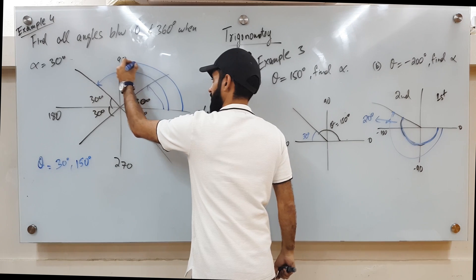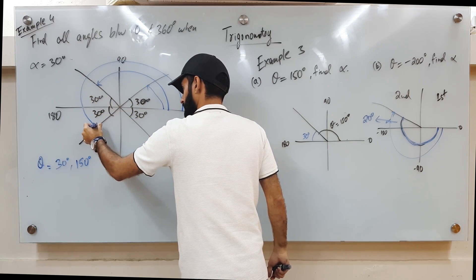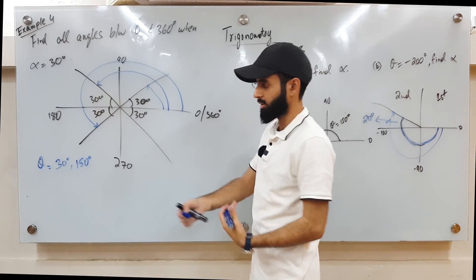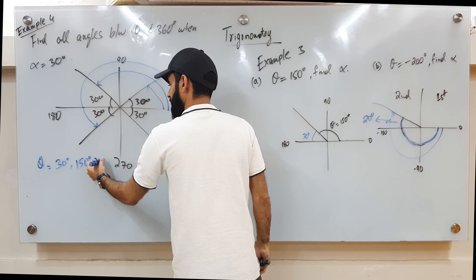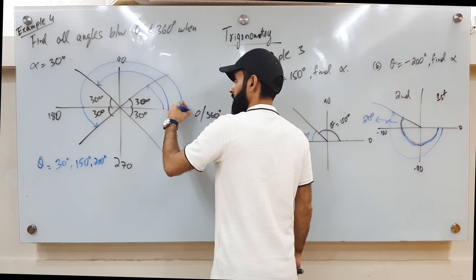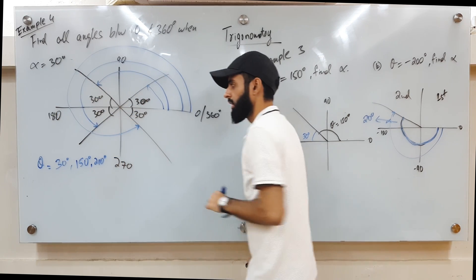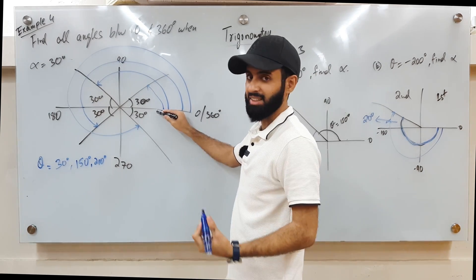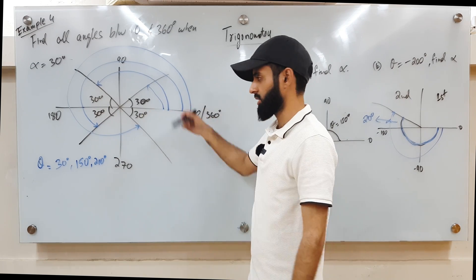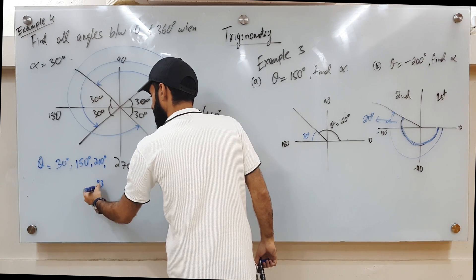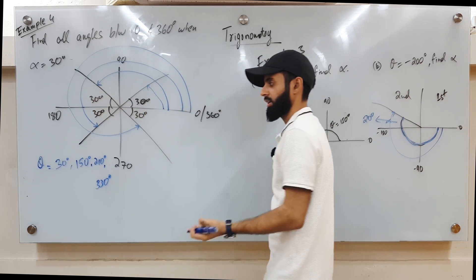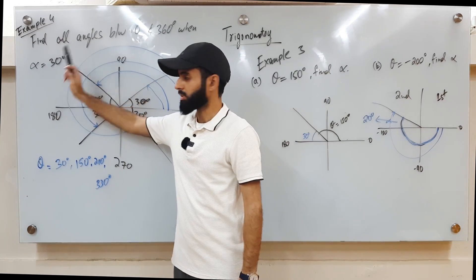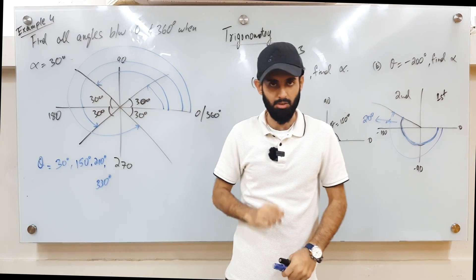Now for alpha in the third quadrant, I go all the way here — it's 180, and I have to go 30 degrees further, so 180 plus 30 equals 210 degrees. For the fourth value, I keep going and then stop here. If I had gone a full circle that would be 360 degrees, but I have to come 30 degrees back, so 360 minus 30 gives 330 degrees. So these are the four values: 30, 150, 210, and 330 degrees.